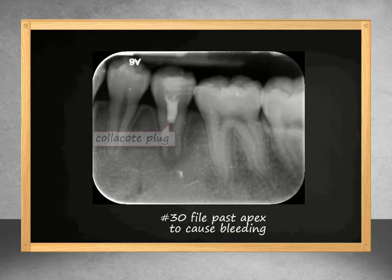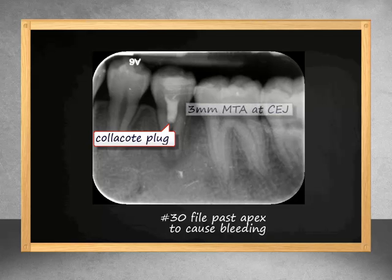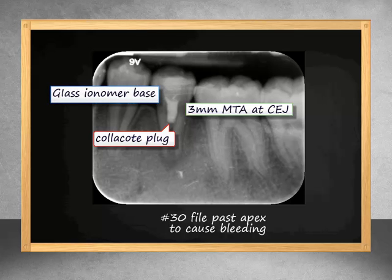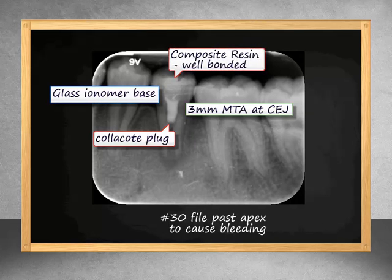A Colicote plug was inserted and a 3mm thickness MTA plug was placed at the level of the CEJ. A glass ionomer base was placed over the MTA and the tooth was restored using a bonded composite resin, taking care to adjust the occlusion.